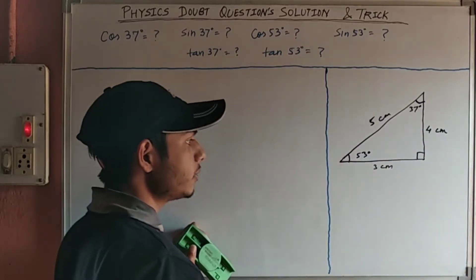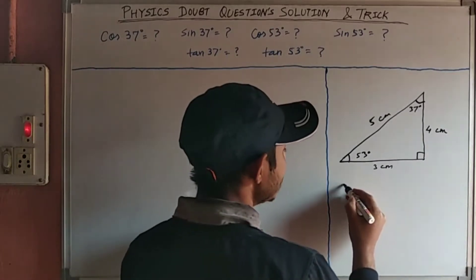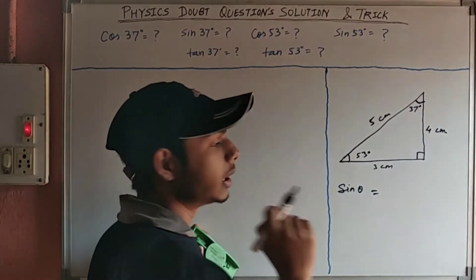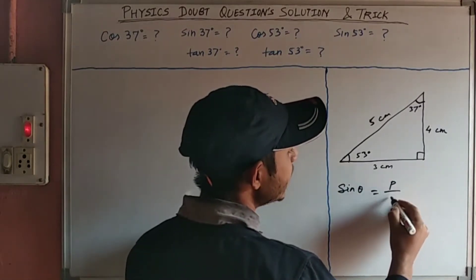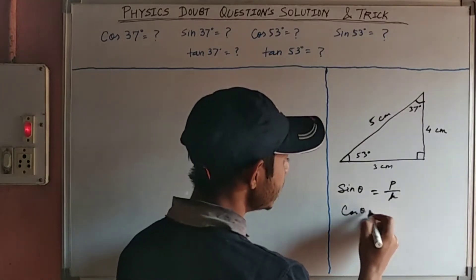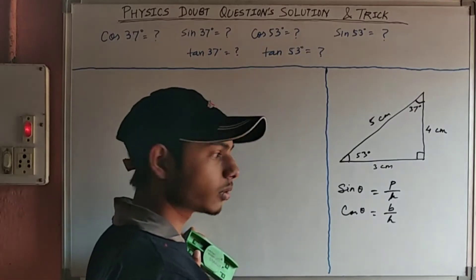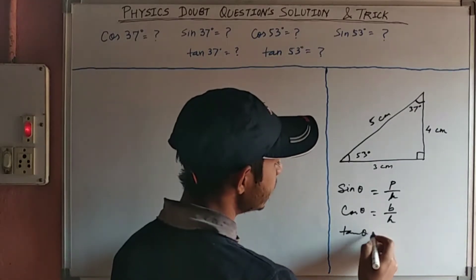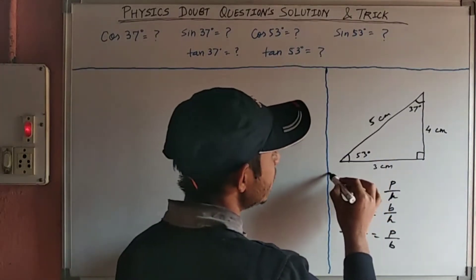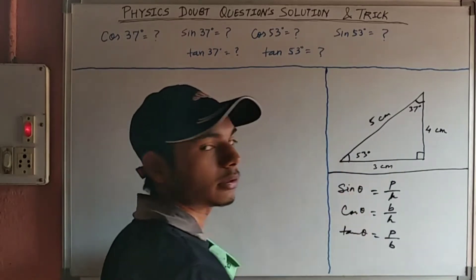Now the second thing: sin θ, cos θ, and tan θ formulas. sin θ = perpendicular / hypotenuse. cos θ = base / hypotenuse. tan θ = perpendicular / base. Remember these two things: the triangle figure and these formulas.